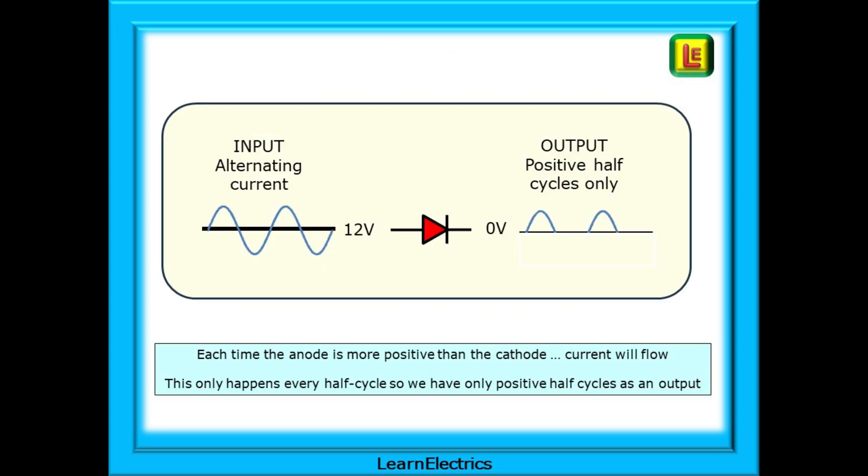Look at just one diode. Each time the anode is more positive than the cathode, current will flow. This only happens every half cycle, so we have only positive half cycles as an output. The bottom half of each cycle is chopped off, not allowed through. This is called half wave rectification.